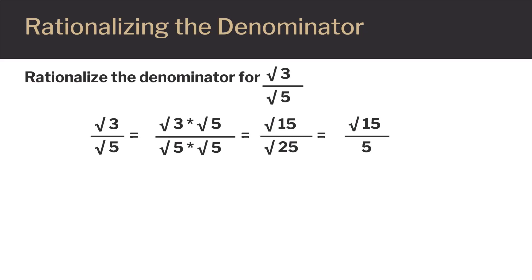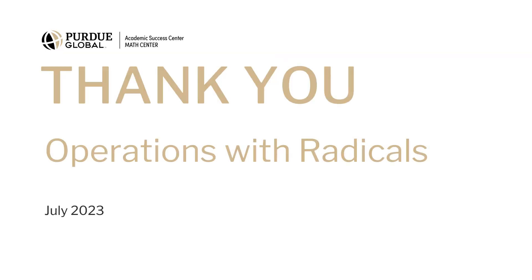In the numerator, the square root of 15 can't be broken down into another perfect square. In the denominator, the square root of 25 equals 5. So our final answer is the square root of 15 divided by 5. Thank you for watching this presentation on Operations with Radicals.